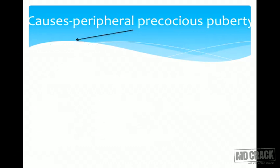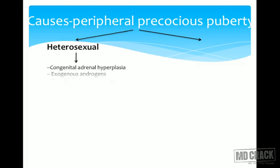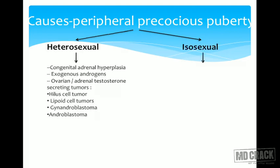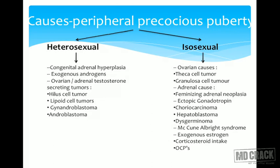Peripheral precocious puberty has two subtypes: isosexual (feminine changes) and heterosexual (virilizing changes). Isosexual causes include ovarian tumors (theca cell or granulosa cell), feminizing adrenal neoplasia, choriocarcinoma with gonadotropin secretion, dysgerminoma, McCune-Albright syndrome, and exogenous estrogen, corticosteroids, or oral contraceptive pill intake.